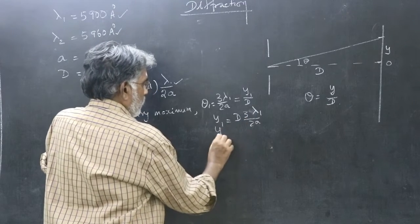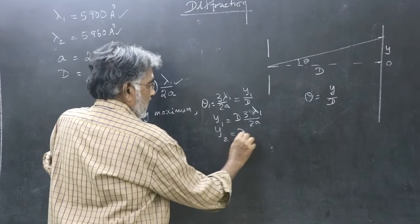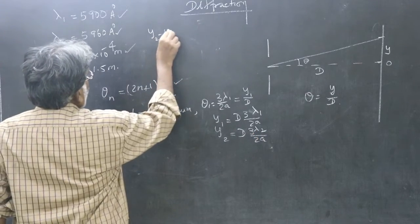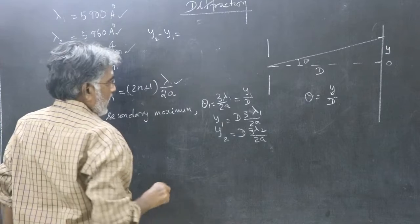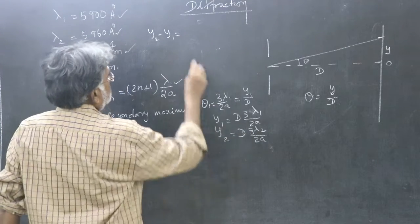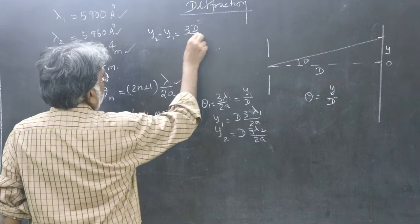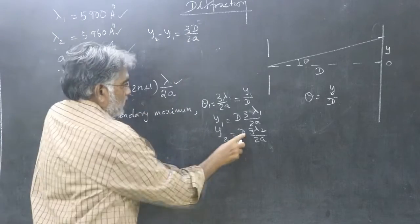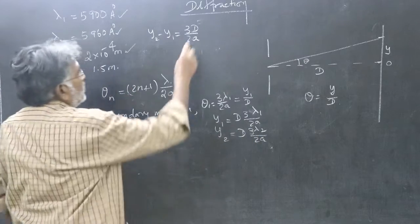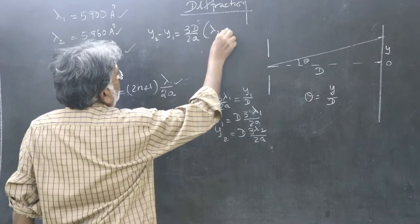Similarly, y2 for the other wavelength, D into 3 lambda 2 by 2a. You are supposed to find y2 minus y1. What is y2? 3D by 2a common. So, 3D by 2a. You take them outside lambda 2 minus lambda 1.